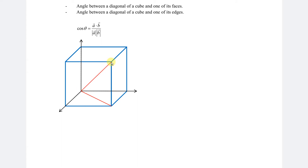So as we can see, the diagonal cuts the angle into two parts. In other words, the angle between the diagonal and the edge plus the angle between the diagonal and the face is always 90 degrees.